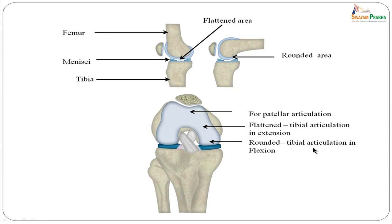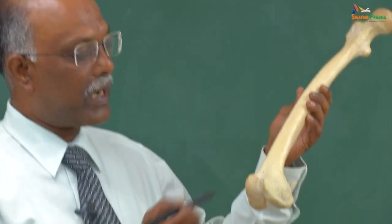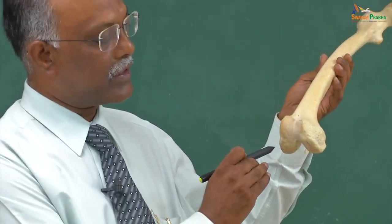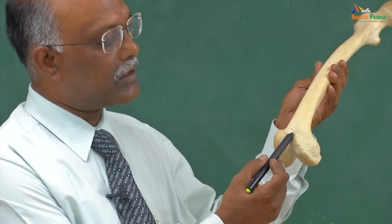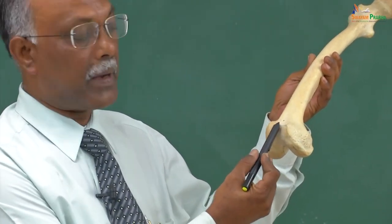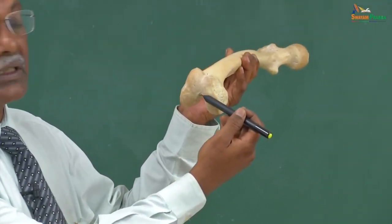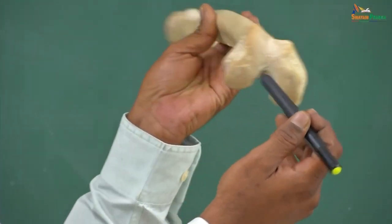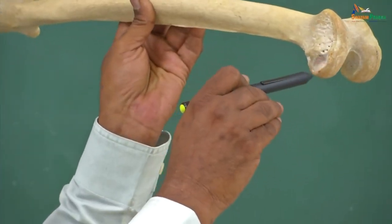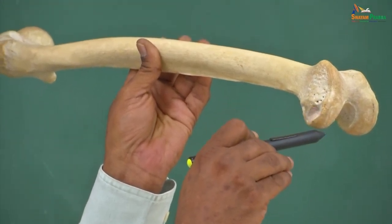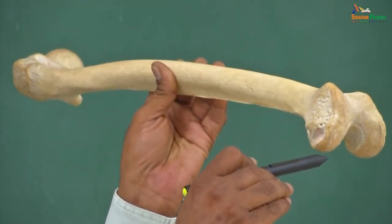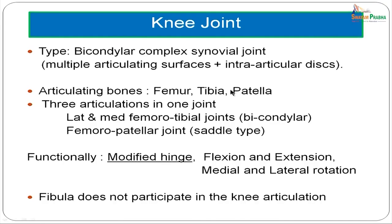Let us have a look at the lower end of the femur and see these same structures again. This is the articular surface — it articulates with the patella anteriorly, whereas this flattened articular surface articulates with the tibia in extension. This rounded area of the femoral condyle articulates with the tibia in flexion. The knee joint is a bicondylar complex synovial joint — complex because there are intraarticular discs, and bicondylar because the medial and lateral condyles of the femur articulate with the corresponding condyles of the tibia.